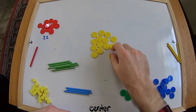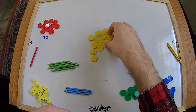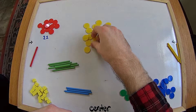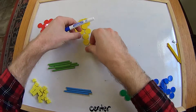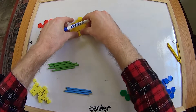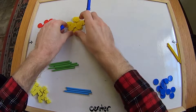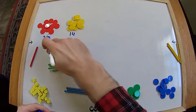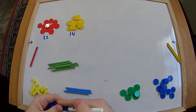So we've got eleven red counters and fourteen yellow counters. We know fourteen is bigger than eleven, so let's put the fourteen yellow counters next to the eleven like that, so it goes eleven, fourteen.